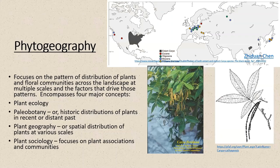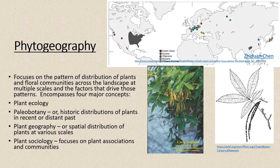For plant geography or phytogeography, we look at things a little differently. We focus on the pattern of distribution of plants or plant communities across the landscape at different scales — sometimes small scale like the Naples Preserve, sometimes peninsular Florida, or as with the map shown, worldwide. There are four major concepts: plant ecology, paleobotany, plant geography, and plant sociology, which focuses on plant communities and associations.